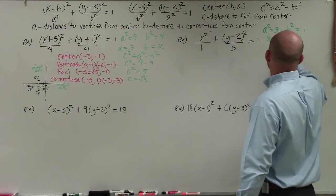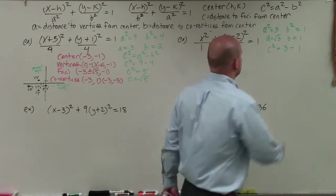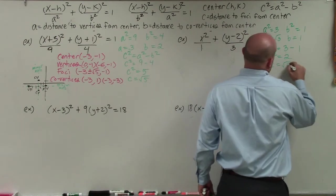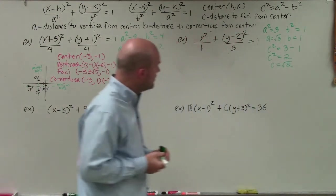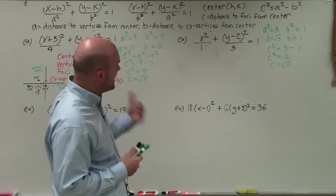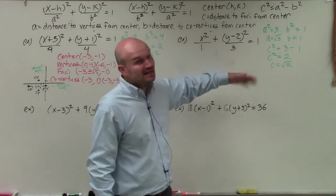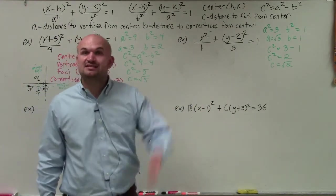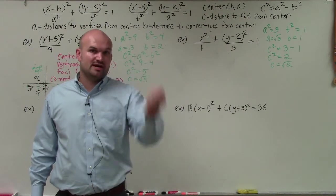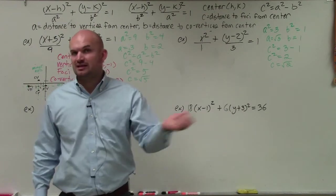So c squared equals a squared minus b squared, which is 3 minus 1 equals 2. Therefore c equals the square root of 2. Now we look at a squared and determine what variable it is under. Since a squared is under the y, my major axis is going to be vertical. That means from the center, my vertices are going to be going up and down, and my co-vertices are going to be going left and right.